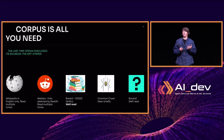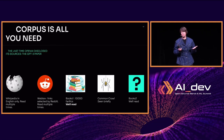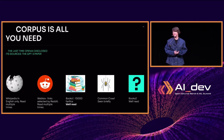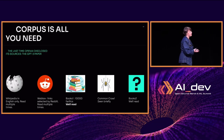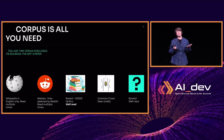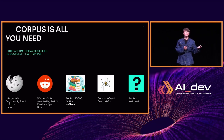The last time that OpenAI actually explained what kind of data was used for their models was for GPT-3. There was already this quite mysterious Books2 dataset which we didn't really know what it contained, and obviously everybody has some doubts about that.